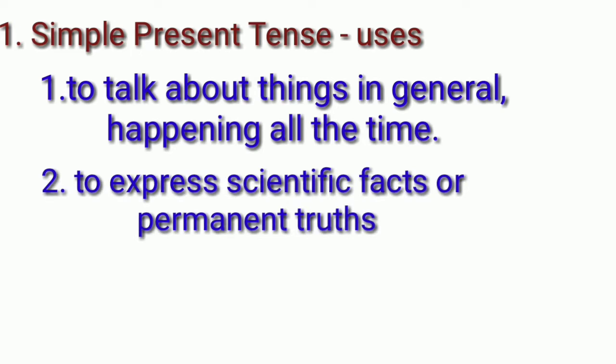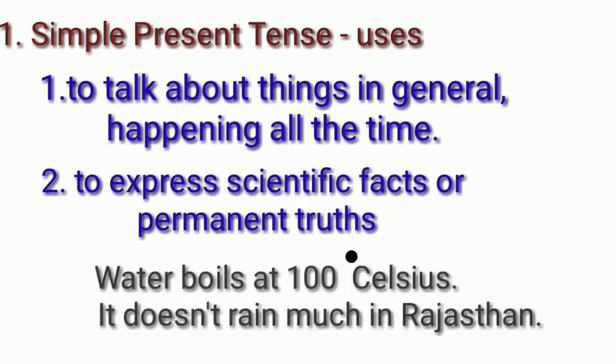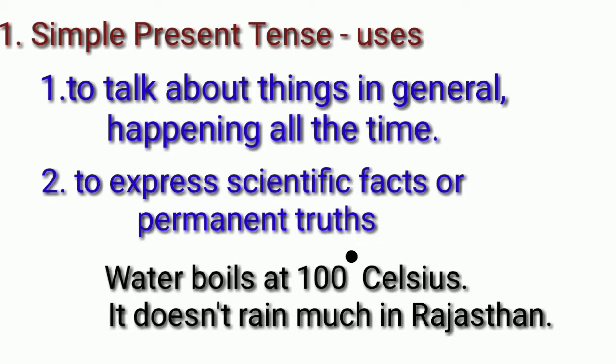The second use of simple present tense is to express scientific facts or permanent truths. For example, 'Water boils at 100 degrees Celsius' — that is a scientific fact. 'It does not rain much in Rajasthan' — that is a permanent truth. So simple present is used for both scientific facts and permanent truths.